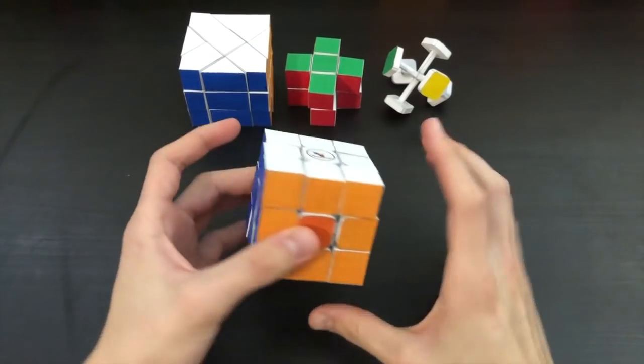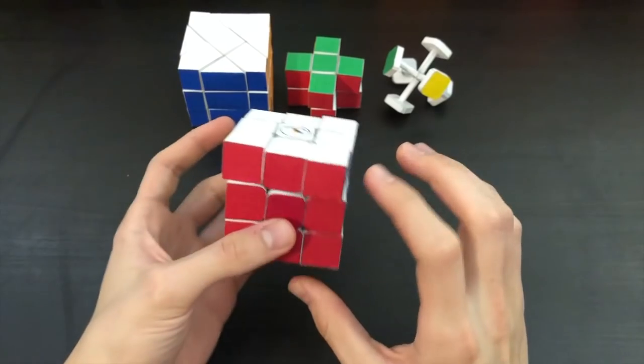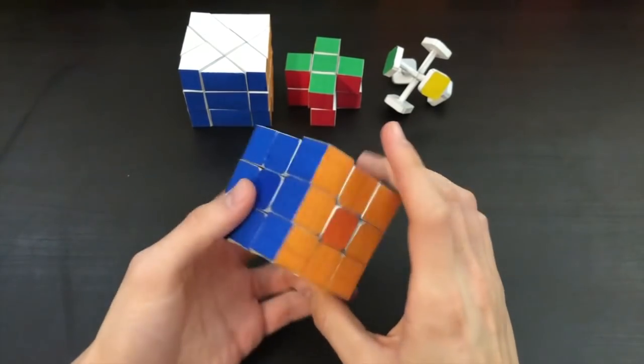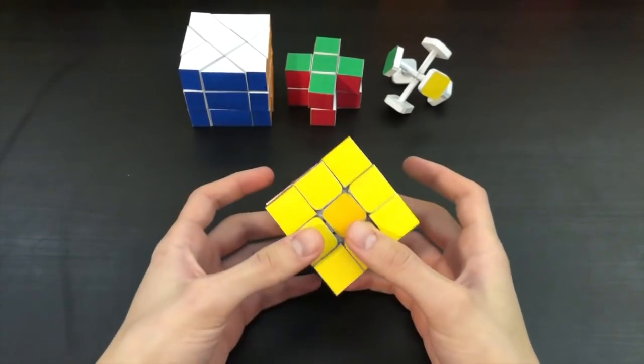All right, so here we have a paper 3x3 and as you can see it has the typical color scheme: red, white, blue, orange, green, and yellow.